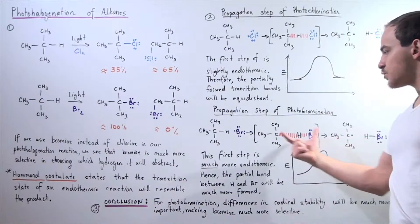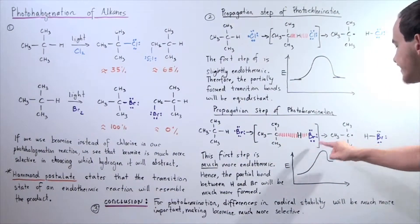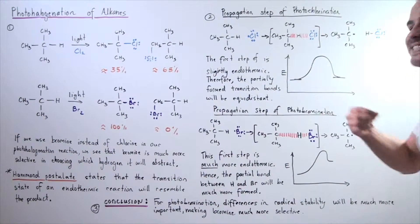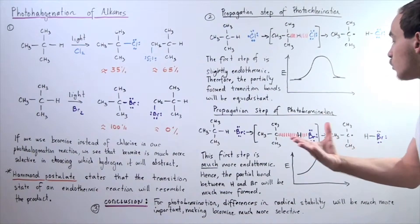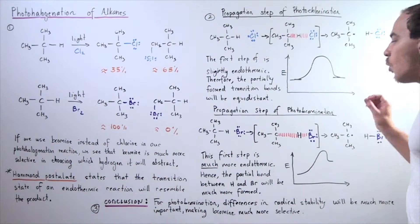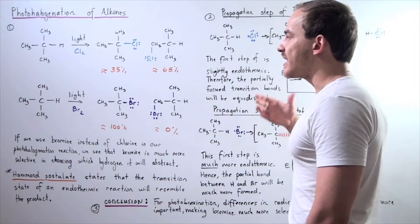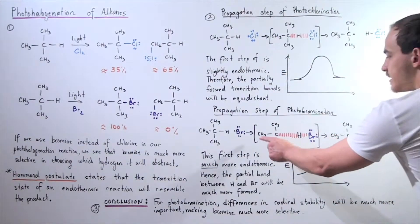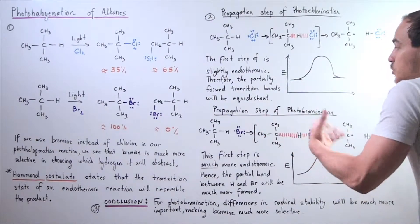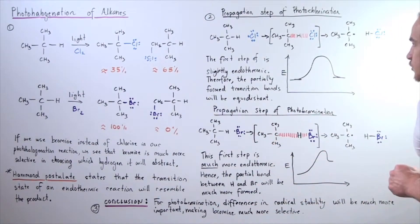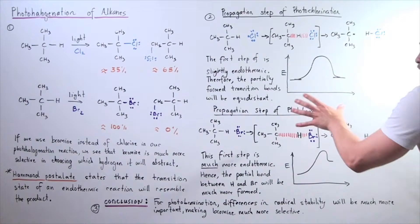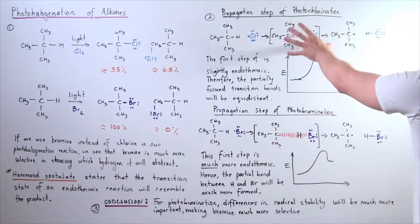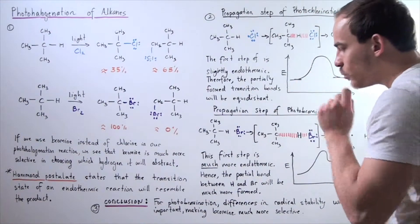So, that means because this reaction is more endothermic, our transition structure will resemble this radical or partially developed radical will resemble our product. So, what does that mean about our selectivity? Well, because this partially formed radical is much more formed in this transition state than this transition state, the difference in stability will play a much larger role in the photobromination than photochlorination.